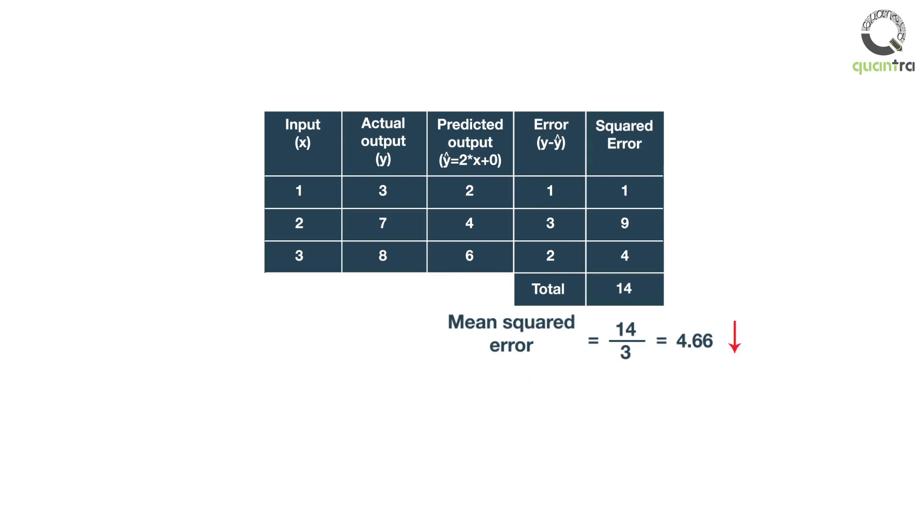To reduce the mean squared error, we can either increase or decrease the weight. If we decrease the weight from 2 to 1, the mean squared error increases from 4.66 to 18.